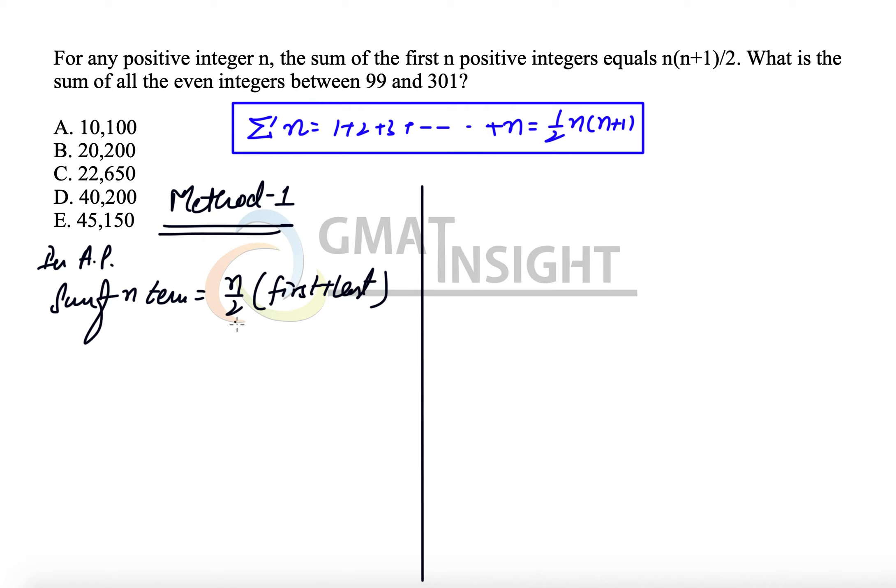If there are n terms, then there will be n/2 pairs. What we need to find is sum of all the even integers between 99 and 301. So we have to calculate 100 + 102 + 104 and so on, going up to 300.